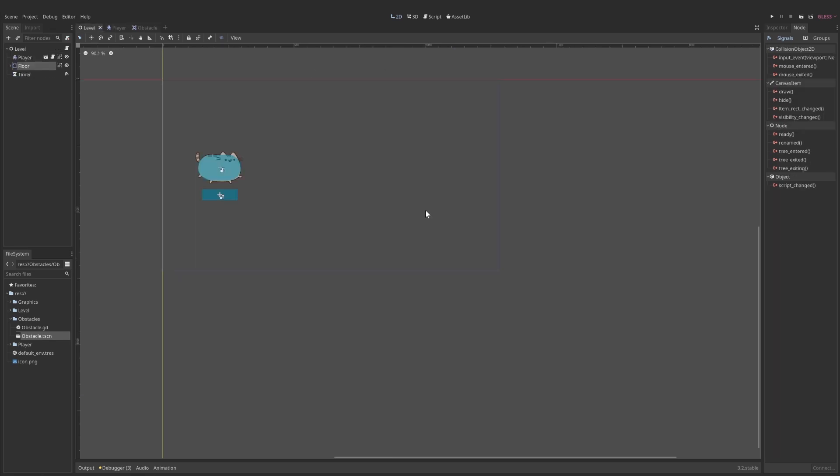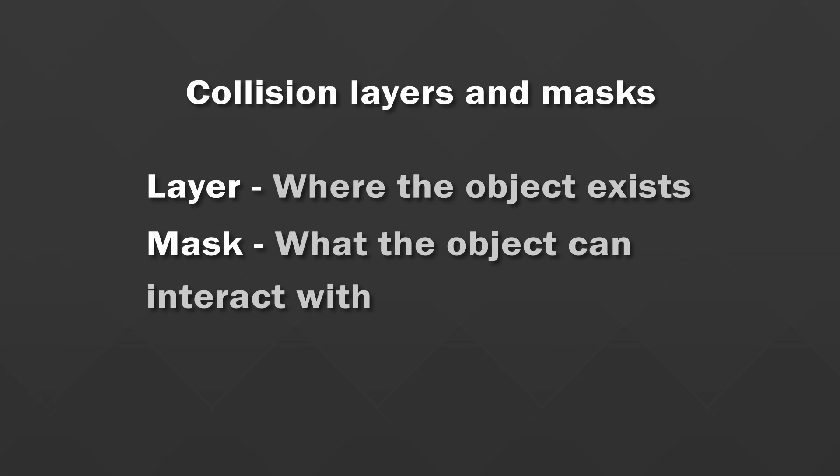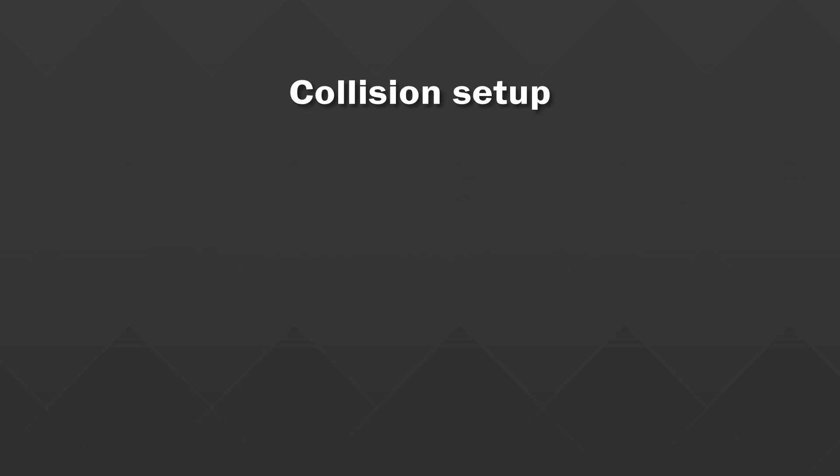We need some way to make sure the floor and the obstacle cannot interact with each other. We are going to fix this by using collision layers and masks. Any object in Godot that can collide with anything else has a collision layer and a collision mask. The collision layer is basically what layer the object is on, and the collision mask is what it can interact with. So you can have an object on a layer that can interact with objects on different masks, and you can even specify if it can interact with itself.